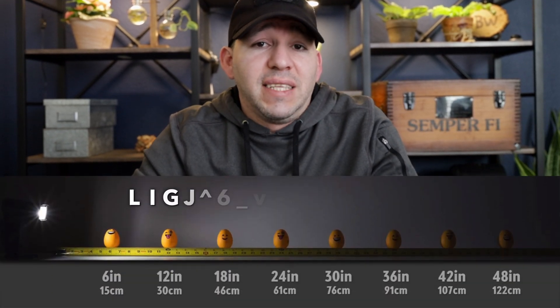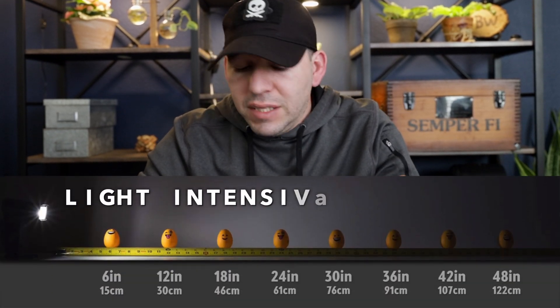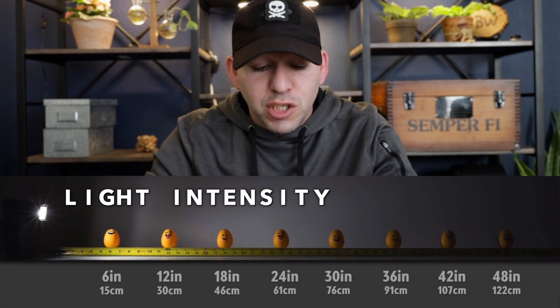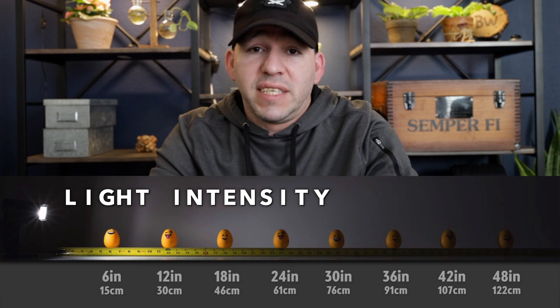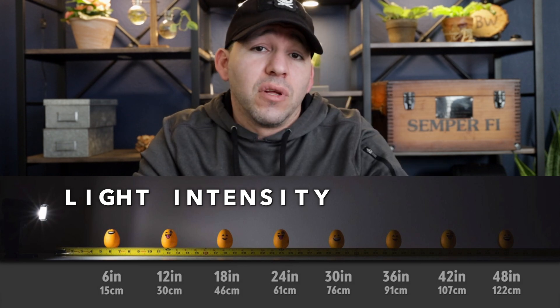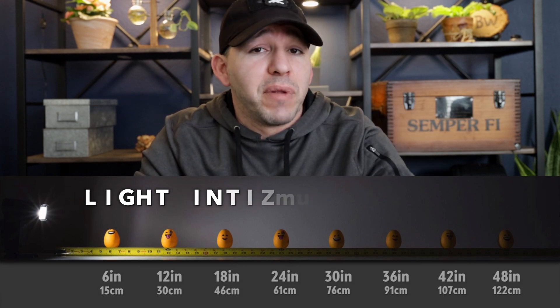The next topic is light intensity. The type of light does play a role in the intensity of your light waves, meaning if your lights are too close it can burn your plants, and if they're too far, your plants may not photosynthesize the way they need to.